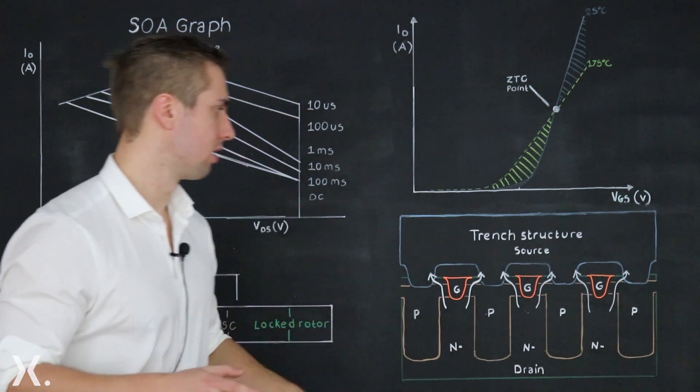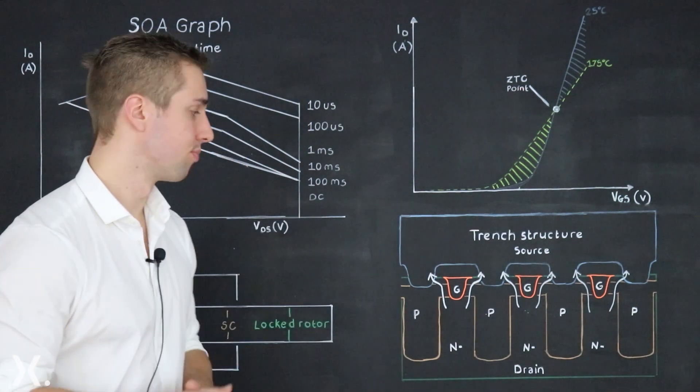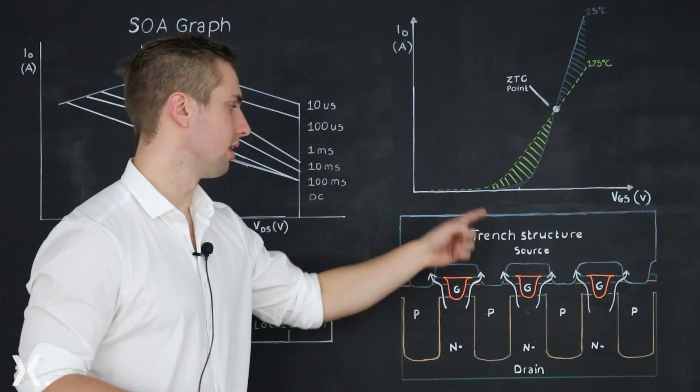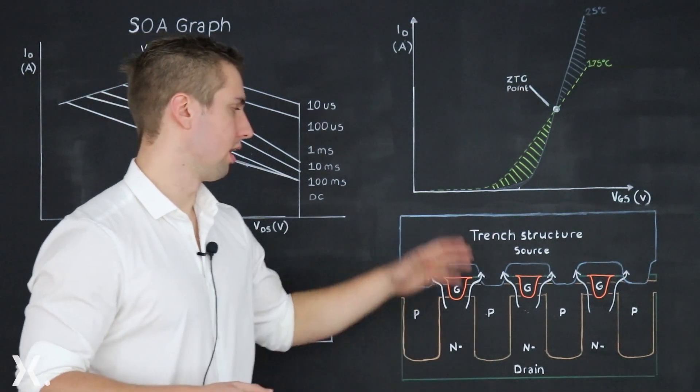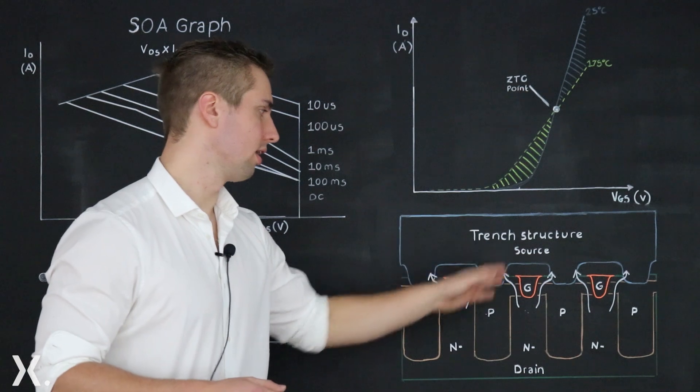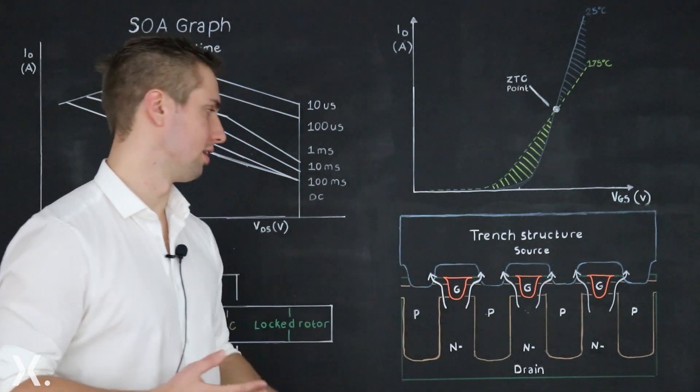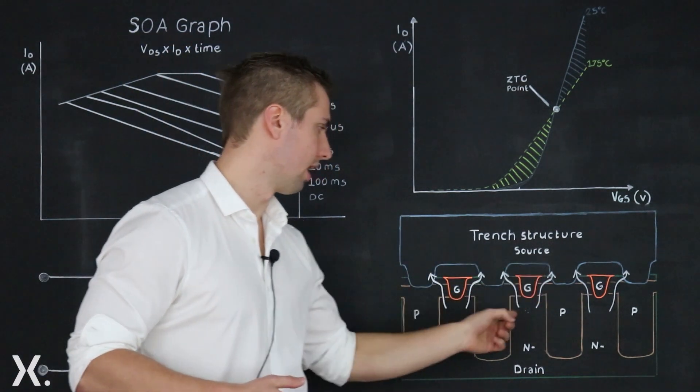Taking this into account let's have a look at the trench structure. Here we have drain gate and source. Whenever we apply a certain amount of voltage to the gate we have free charge carriers created in a channel around the gate as shown by the arrows.